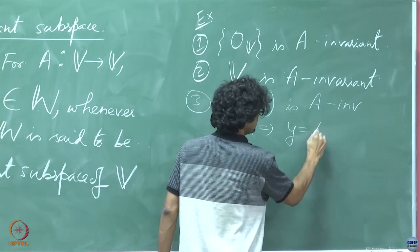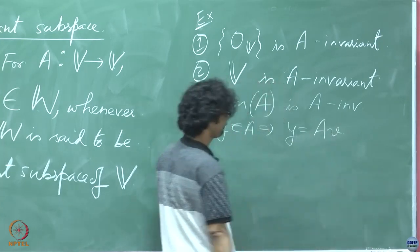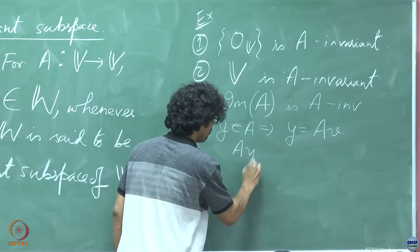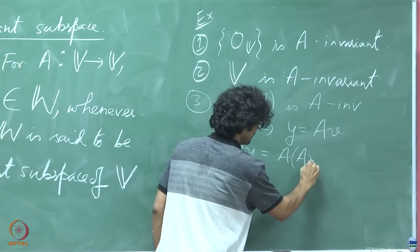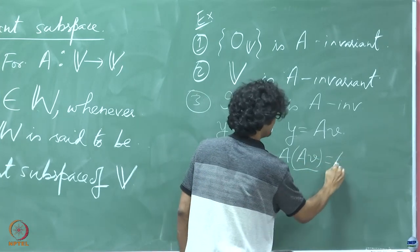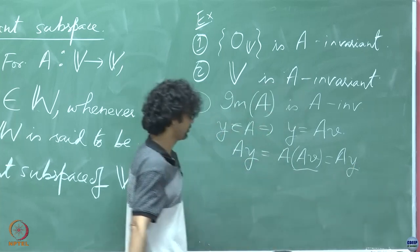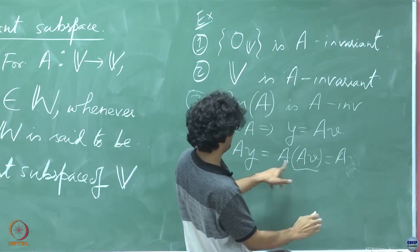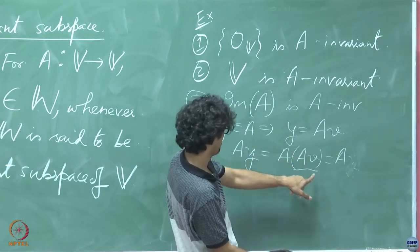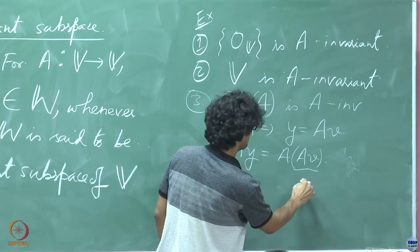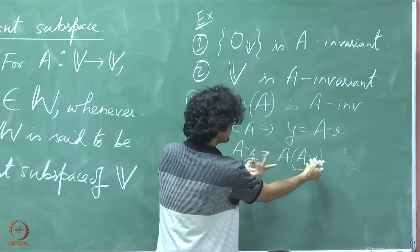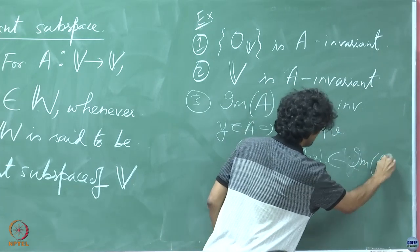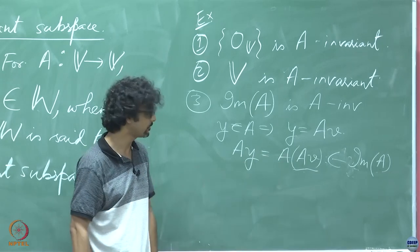that y is equal to Av. All right. And now of course, Ay is equal to A acting on Av. Yeah, so that's just Ay, so A of... Yeah, yeah, so this is just Ay. So let's just call this, I mean, this obviously by its very nature...